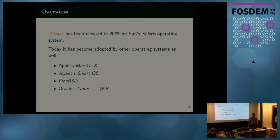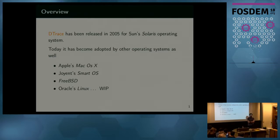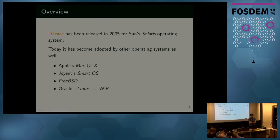Today is 2018, and D-trace has been ported to various operating systems. It is now used on Apple Mac OS X — of course, because it is a fork of Solaris basically. FreeBSD adopted D-trace. Oracle Linux is a work in progress, but it's ported to Linux in general. I have also seen some attempts to develop D-trace for Windows.